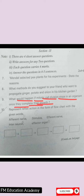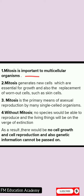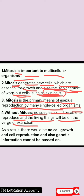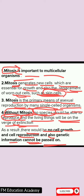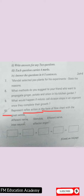Question 9: What would happen if mitotic cell division stops in an organism once it completes its growth? There are two types of cell division: mitosis and meiosis. Mitosis generates new cells essential for growth and replacement of worn-out cells such as skin cells. Mitosis is also the primary means of asexual reproduction for single-celled organisms. Without mitosis, no species could reproduce and living things would be on the verge of extinction. There would be no cell growth, cell reproduction, and genetic information could not be passed on.